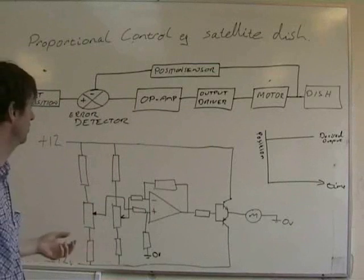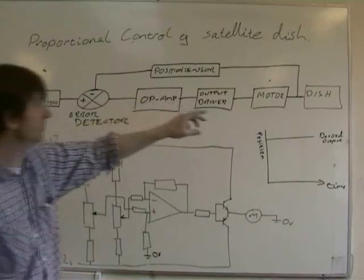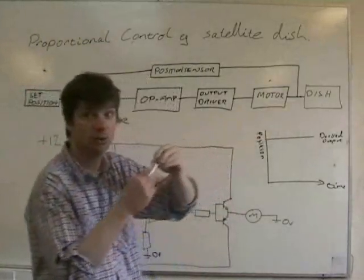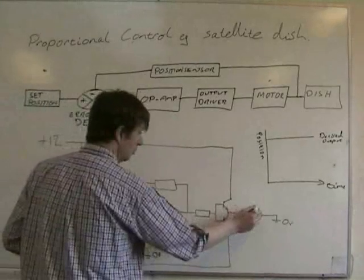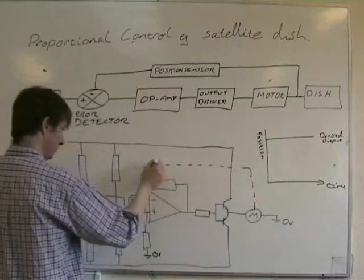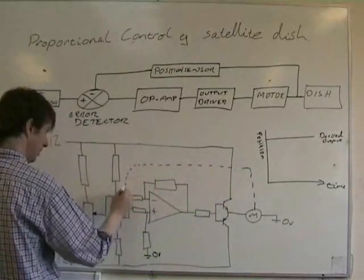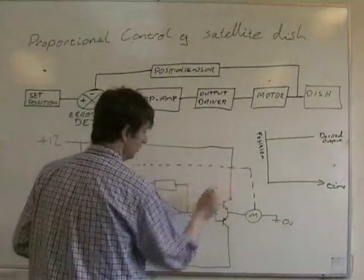One potential position sensor is a potentiometer. So as the dish turns, the potentiometer itself gets turned. So there'll be a link, a mechanical link, between the motor and that potentiometer there. Mechanical link between those two.